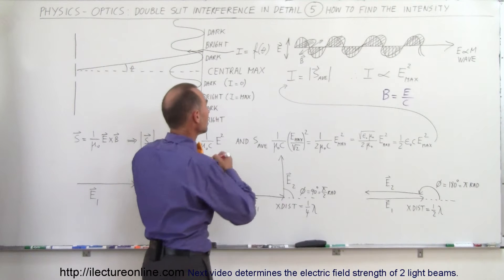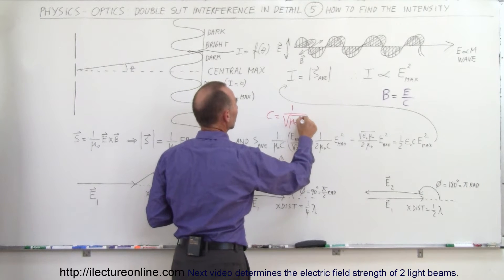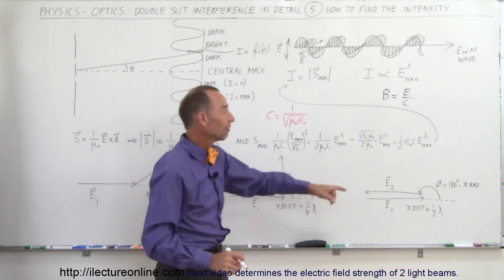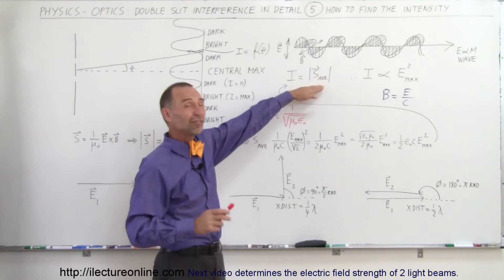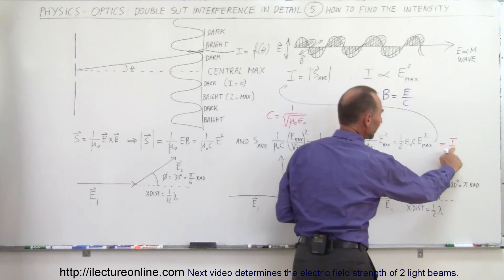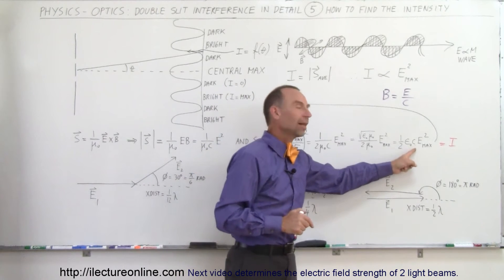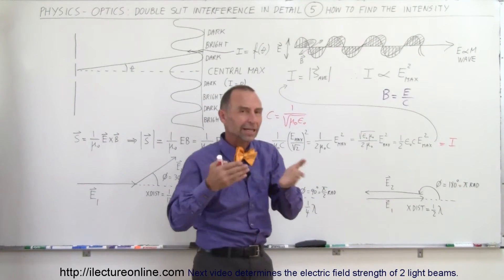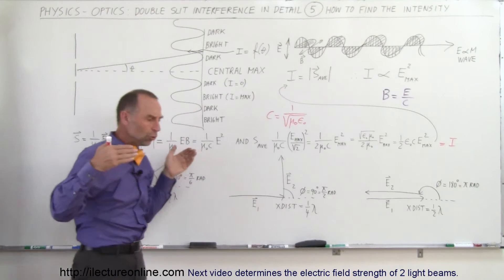Using the relationship c = 1/√(μ₀ε₀), we can simplify the expression for the magnitude of the Poynting vector into a cleaner form involving ε₀ and c. This is the preferred way to express the average Poynting vector magnitude, which is also the intensity. Notice that the intensity becomes a function of the amplitude of the electric field oscillations squared, multiplied by the constants ε₀ and c. Therefore, the intensity of light or any electromagnetic radiation is simply proportional to the electric field oscillation amplitude squared.